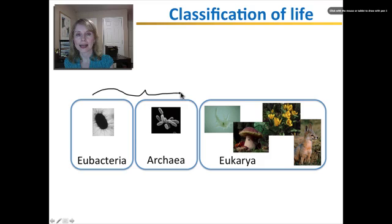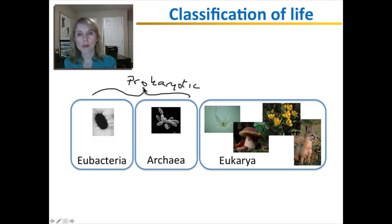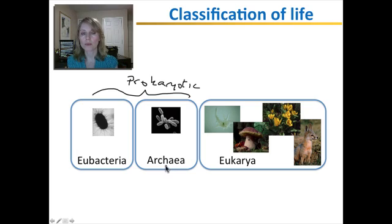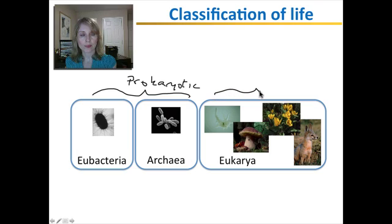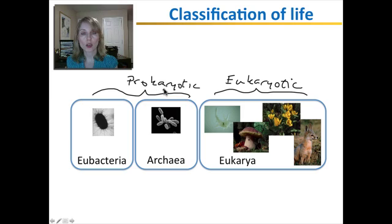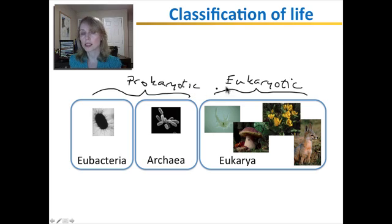Eubacteria and Archaea are both considered to be prokaryotic. Eubacteria means true bacteria. Archaea are another kind of bacteria — many of them are known for being able to live in very extreme environments, like extreme salt or extreme heat. Eukarya are considered to be eukaryotic. For now, think of prokaryotic as simple, smaller cells, and eukaryotic cells as bigger and more complex.